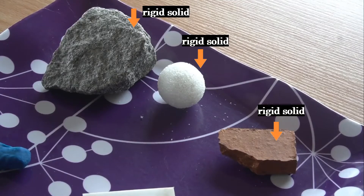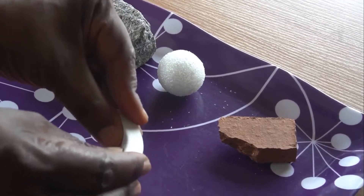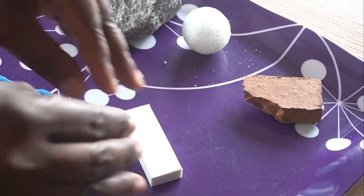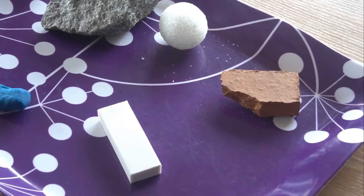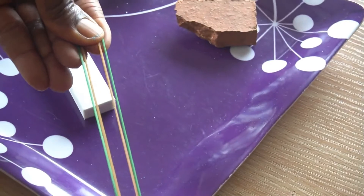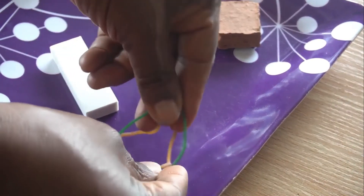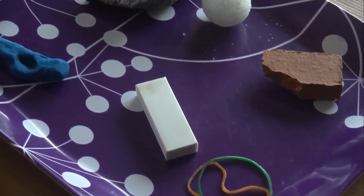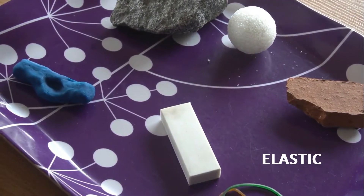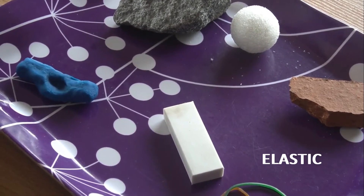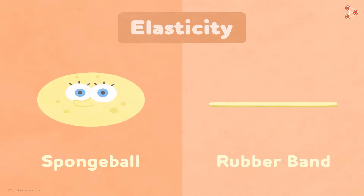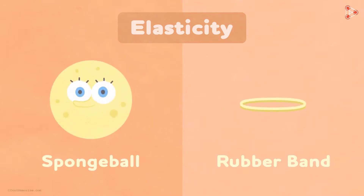Now solids like this one — when I apply pressure the shape changes, but when I remove the pressure it returns to its original shape. And this one: when I apply pressure the shape changes, and when I remove the pressure it returns to its original shape. Solids like this are called elastic. Elastic comes from the Greek word elastos, meaning to recover — they recover their shapes when the pressure is removed.